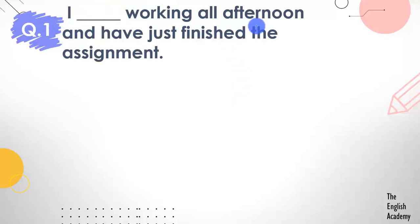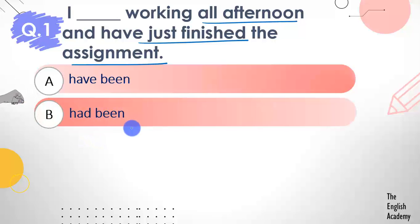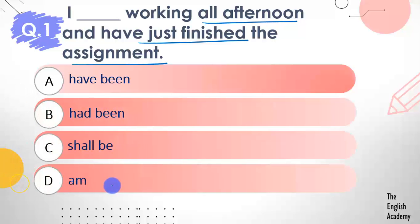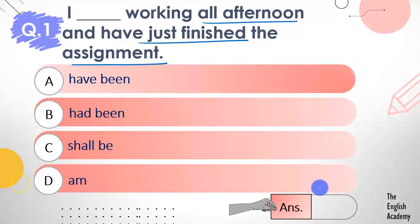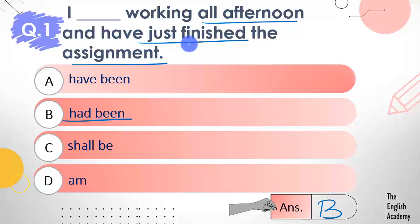Question number 1: I ___ working all afternoon and have just finished the assignment. Options: A) have been, B) had been, C) shall be, D) am. The answer is option B, had been. The rule is that when two tenses appear in one sentence — the first is past perfect continuous tense (had been working) and the next is present perfect tense (have just finished). So: I had been working all afternoon and have just finished the assignment.